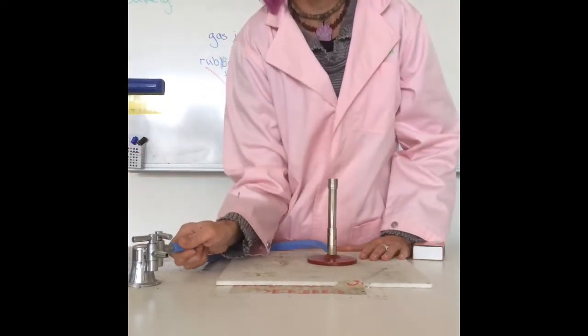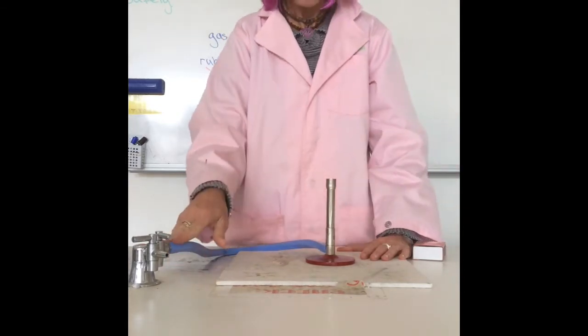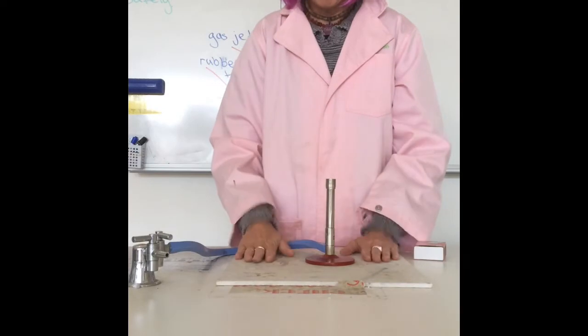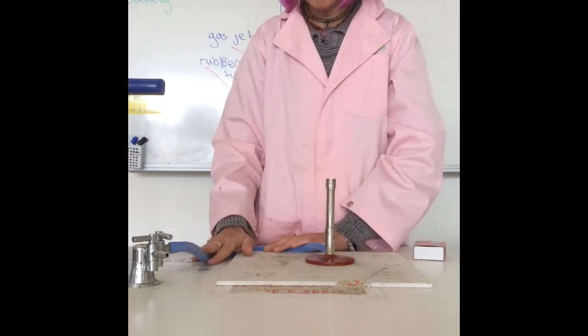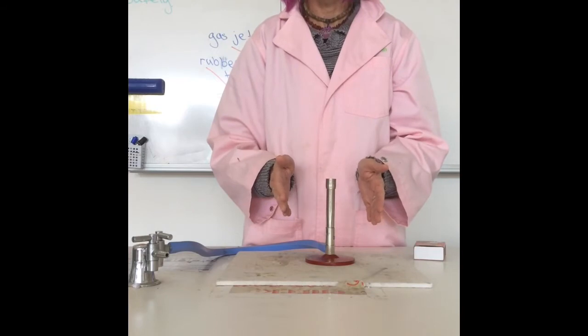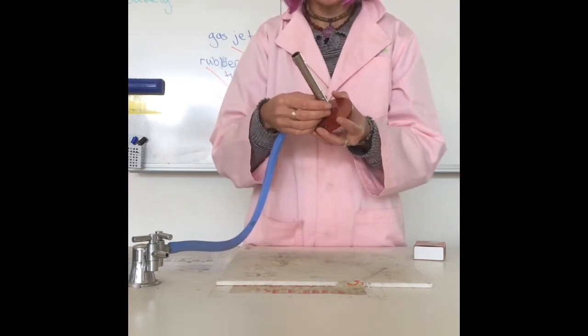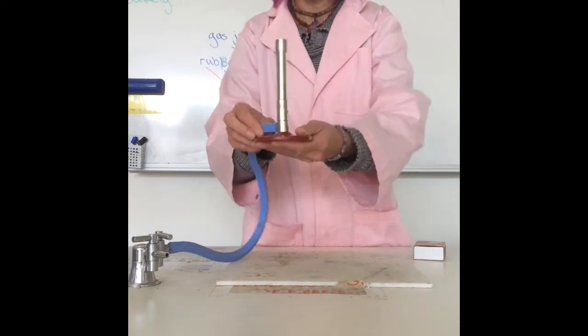You can now put your Bunsen burner on the heatproof mat and plug it into the gas tap closest to you. So, heatproof mat, I've checked for cracks in the rubber tubing. What do I have to do next? That's right. I need to check to make sure the air hole is closed. So the air hole is now closed.